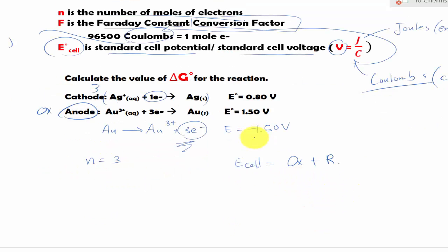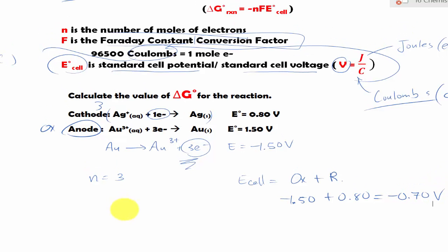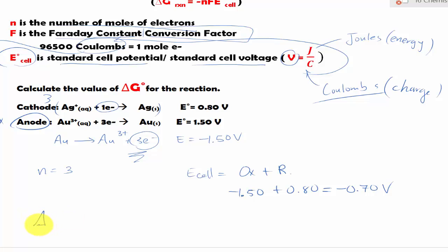E_cell equal to oxidation plus reduction. In this case, our oxidation is -1.50, and our reduction is 0.80. Gives us -0.70 volts.